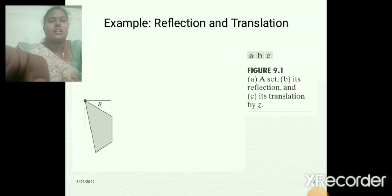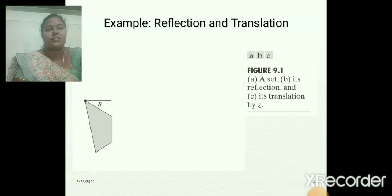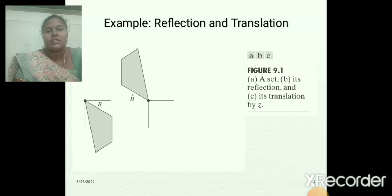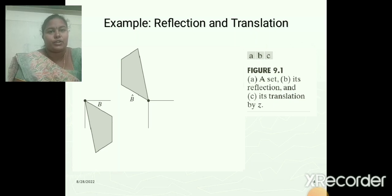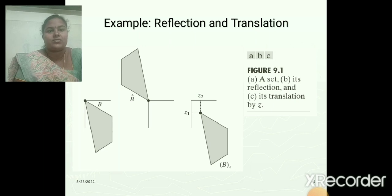Here is an example for reflection and translation. The first image is a set B. The second image is a reflection of the given input image, that is B-cap. The third one is the translation by Z value — the given input image is translated by the Z parameter.